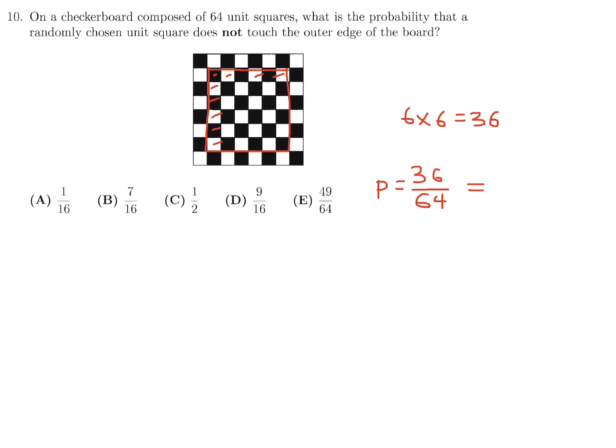And lowest terms, let's say 18 over 32, 9 over 16. So number 10, the answer is D.